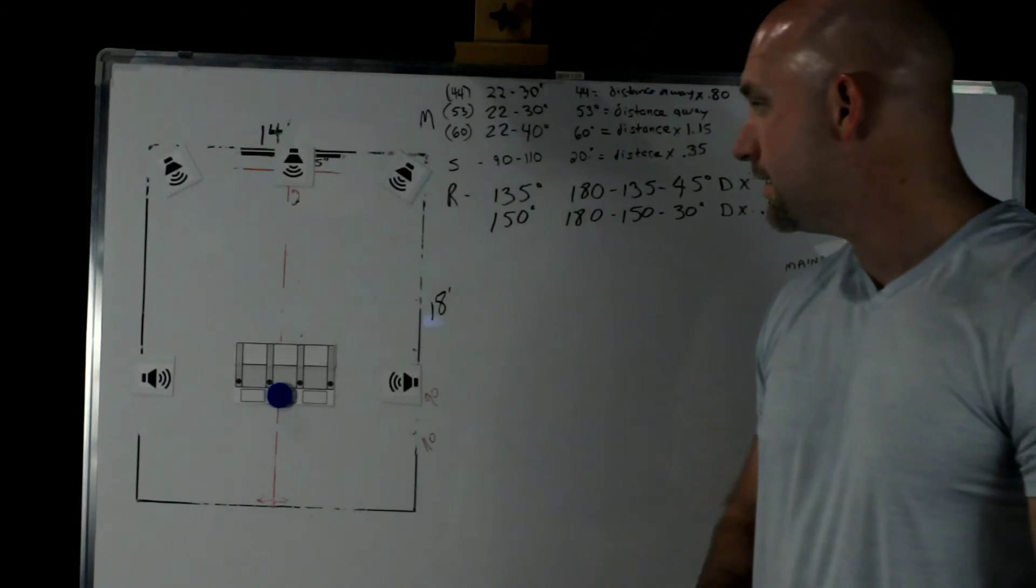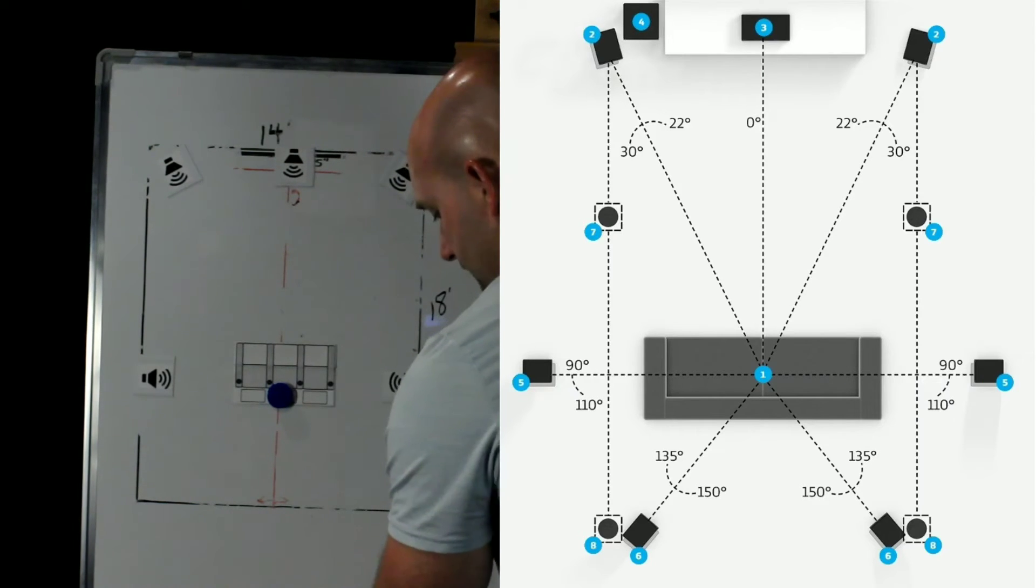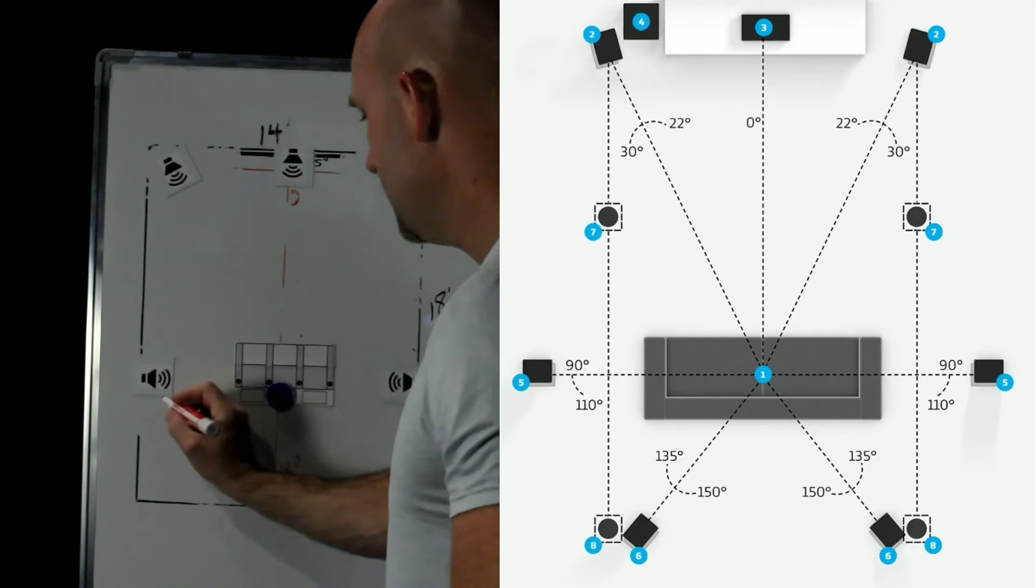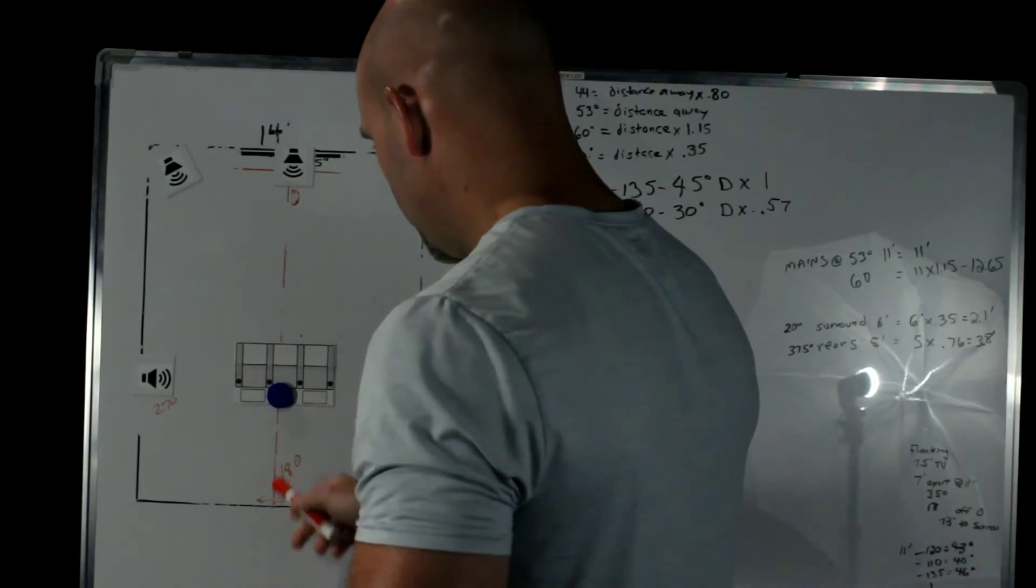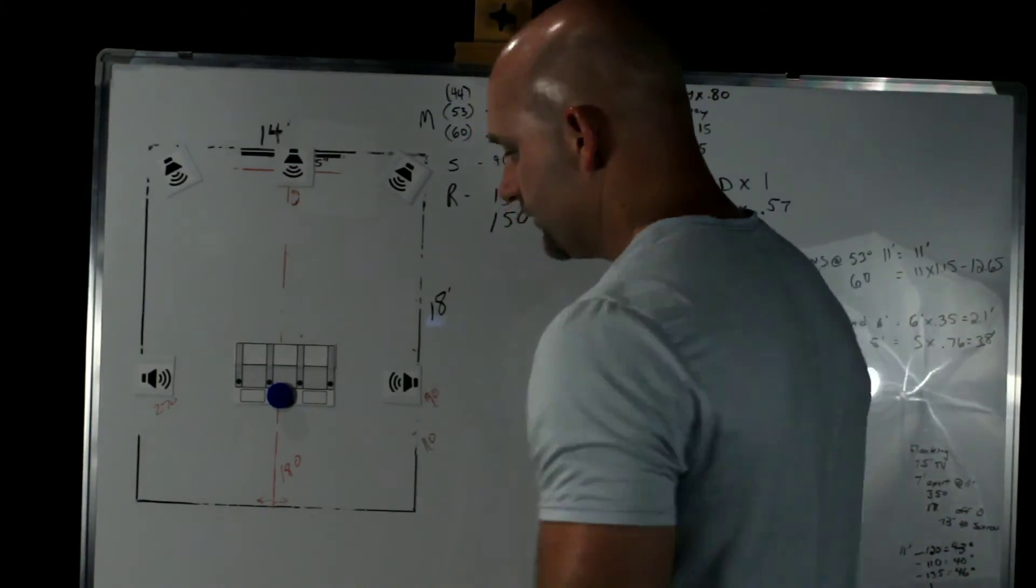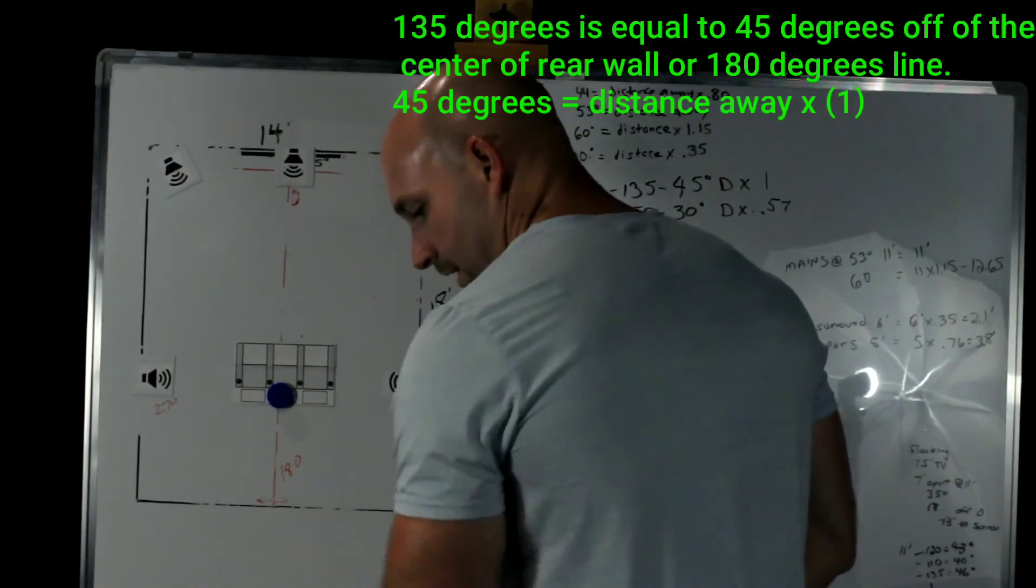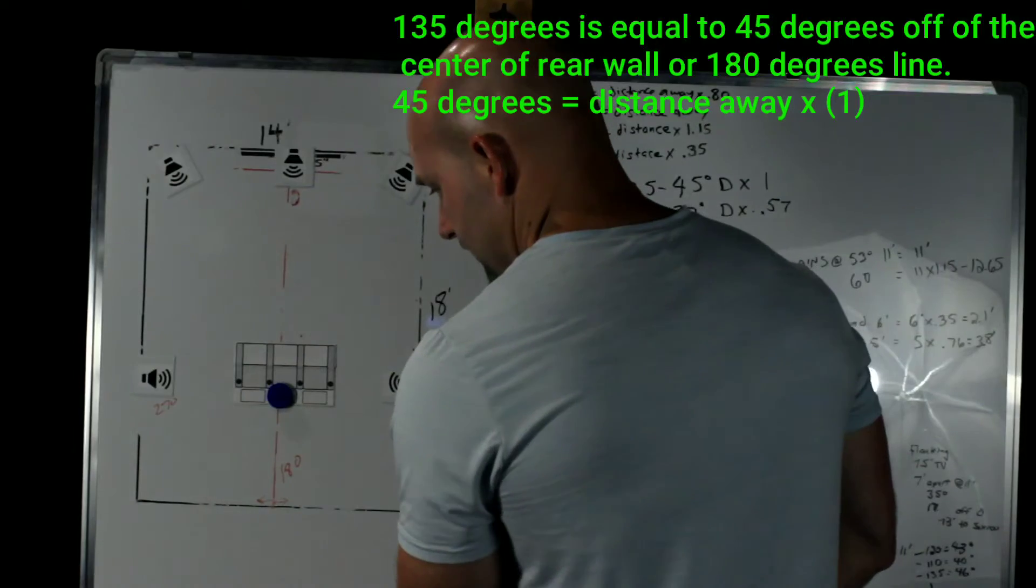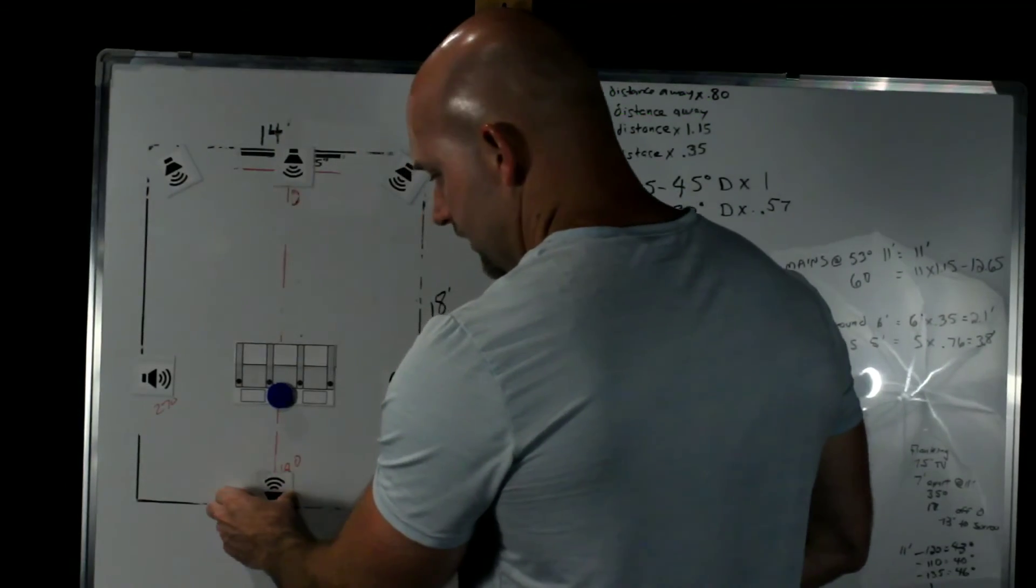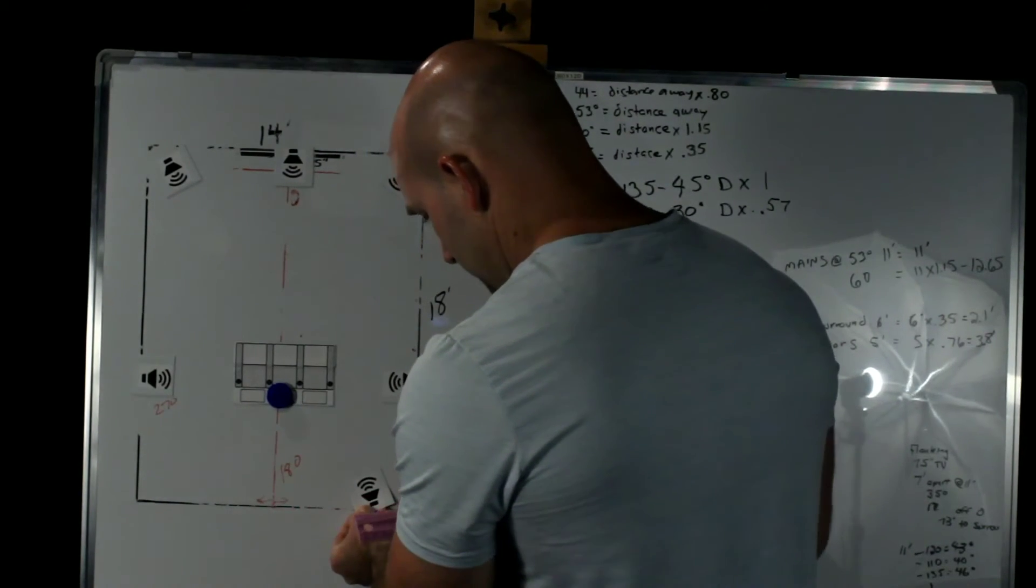So the rears, Dolby specs the rears to be between 135 and 150 degrees. So an easy way to calculate that is to use this line here. So we know this is zero, this is 180, 90, and this is 270. So we're going to use this 180 line here. So we're going to take 180 minus 135, and that gives us 45 degrees. And the 45 degrees is going to be equivalent to the 135 degree angle. So all we have to do for that one, because it's 45 degrees, is distance away, which is 5 feet is going to be distance right and left. So we'll come off of that center point 5 feet and place our rears.